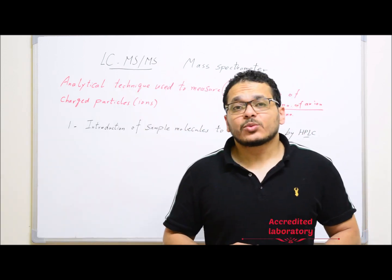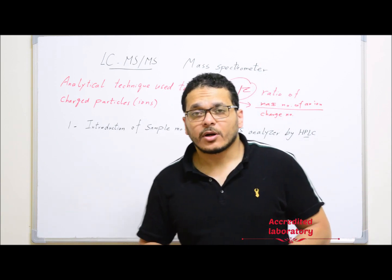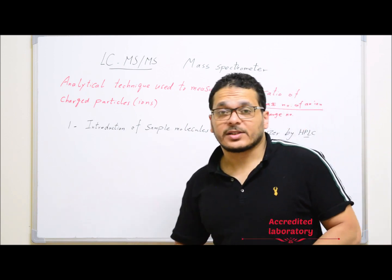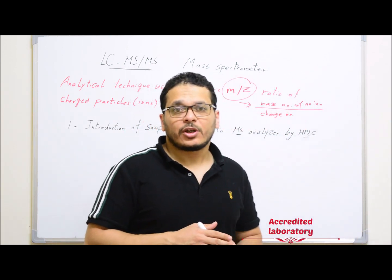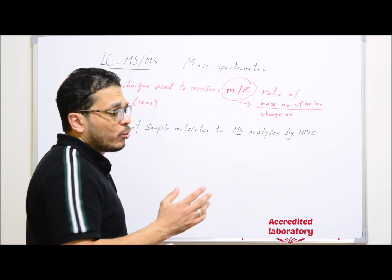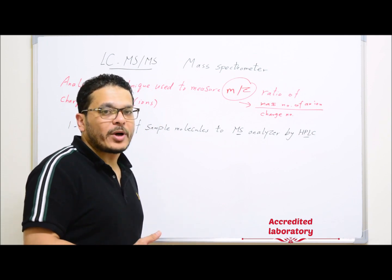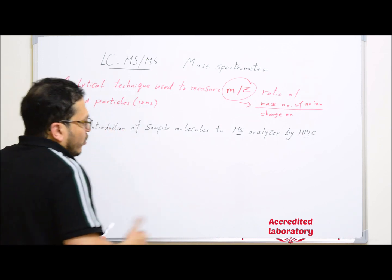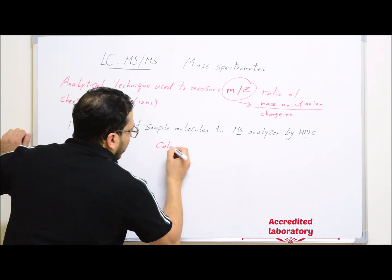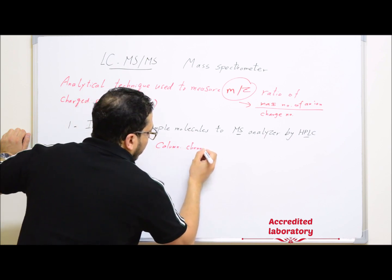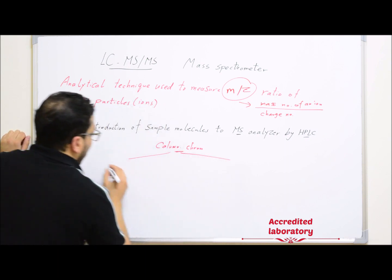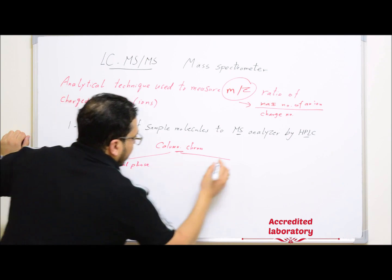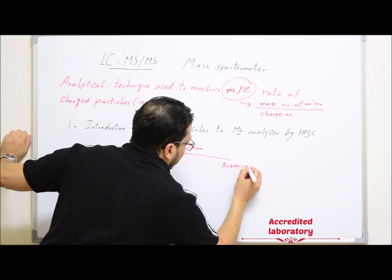First, samples will be introduced to the mass analyzer by the use of HPLC. In this case, HPLC is used only for introduction of the samples to the mass analyzer, and also for separation of compounds according to polarity. This is not our main subject for today, but it's better to review it for reference. There are two types of chromatography: normal phase and reverse phase.